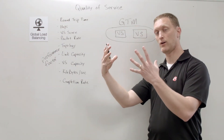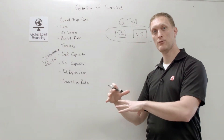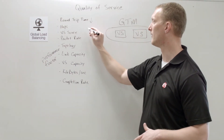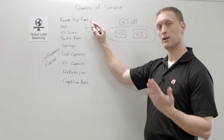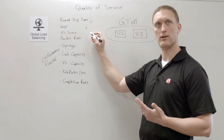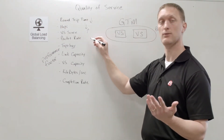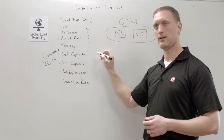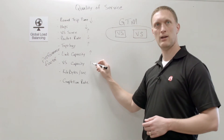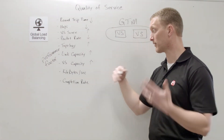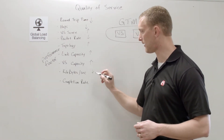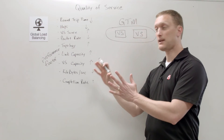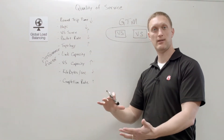Keep in mind that a high value on some of these factors is good, and a low value on others is good. Round trip time: low value is better. Hops: low value is better. Virtual server score: high value is better. Packet rate: low value is better. Topology: high value is better. Link capacity: high value is better. Virtual server capacity: more capacity is good. Kilobytes per second: low is better. Completion rate: high value is better.